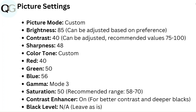Picture Settings: Picture Mode Custom, Brightness 85 (adjustable based on preference), Contrast 40 (recommended values 75–100), Sharpness 48, Color Tone Custom — Red 40, Green 50, Blue 56 — Gamma Mode 3, Saturation 50 (recommended range 58–70).